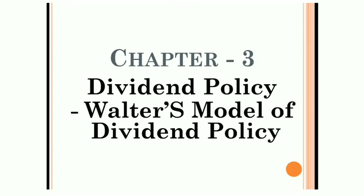The firm determines the optimum dividend policy with the help of the relationship between R and K. If R is greater than K, the firm is able to earn more than what the shareholders could expect. If R is less than K, shareholders can earn a higher return by investing somewhere else. After Walter's model, three categories of companies are determined by comparing R and K.